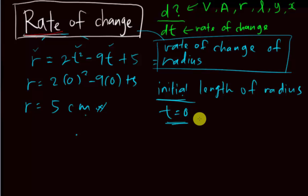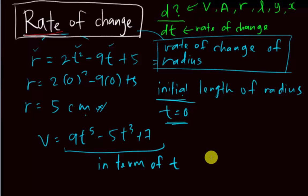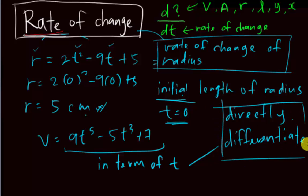So just to summarize: if the equation is already in terms of t, you can differentiate directly — you do not need to form the chain rule. For example, if V = 9t⁵ − 5t³ + 7 and they ask for the rate of change of volume, just differentiate directly. If you have any questions about rate of change or feel confused, post a comment below. If you like this video, please subscribe or give a thumbs up. Thanks for watching.